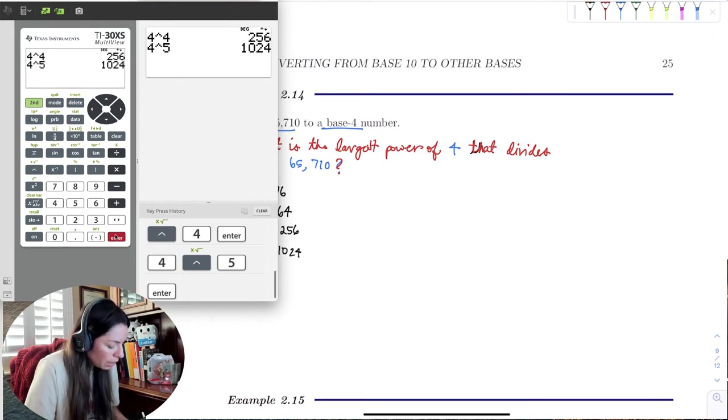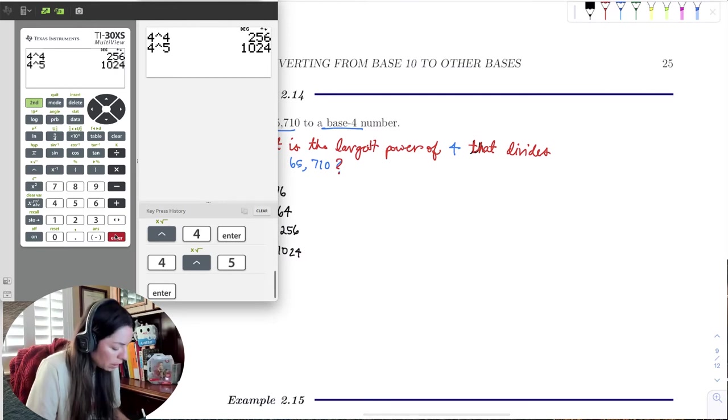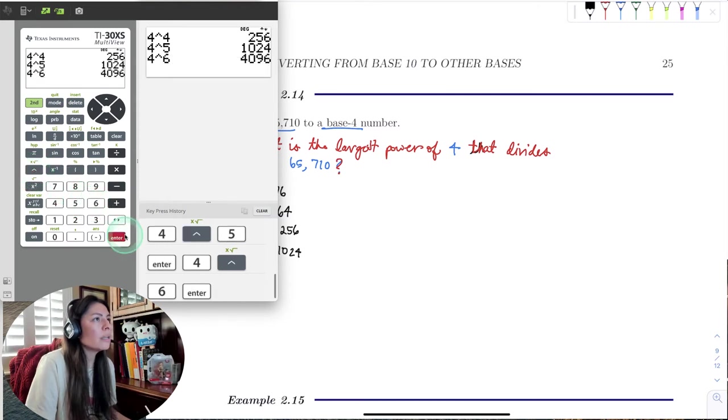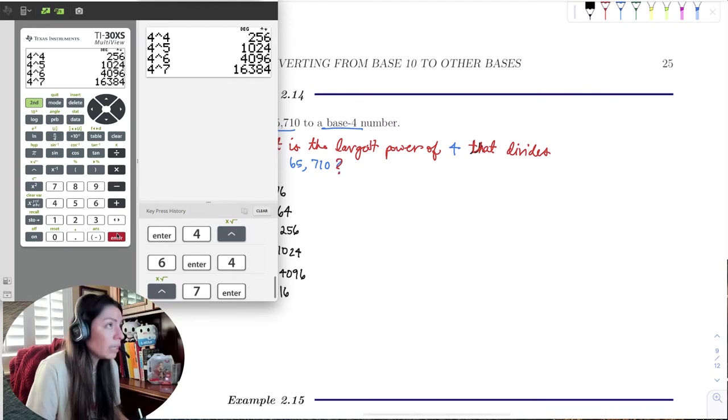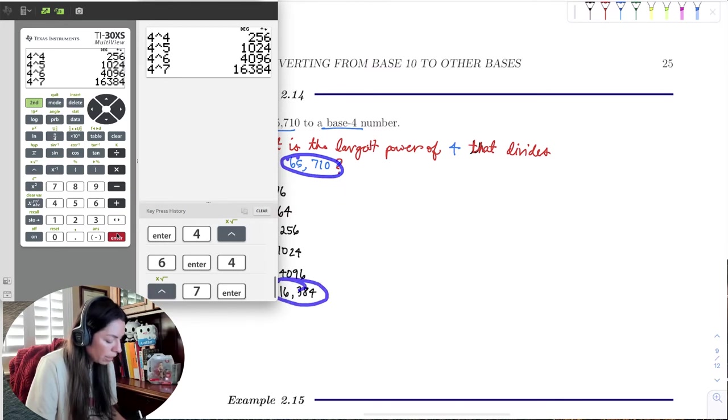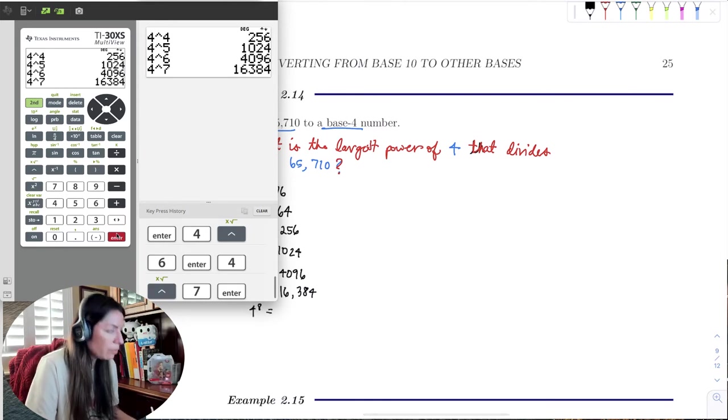So I do see that 1,024 does go into this 65,710, but it's still really small. So let me go up to 4 to the 6th and see if I can get closer to that base 10 number. So I'll go 4 to the 6th. It's 4,096. So I feel like I'm getting closer, but I need to make sure and see what 4 to the 7th is.